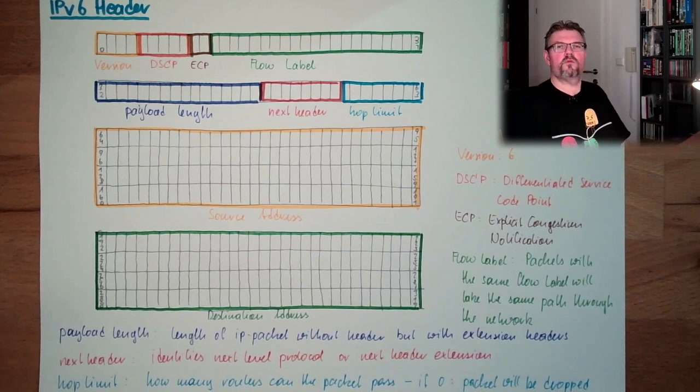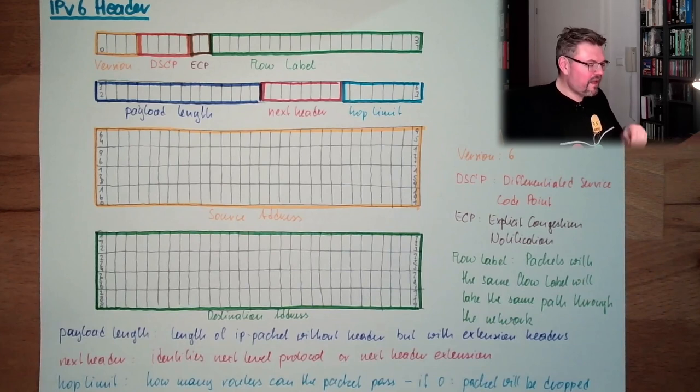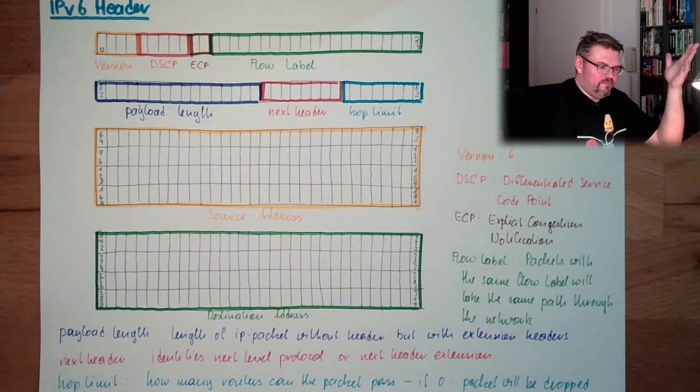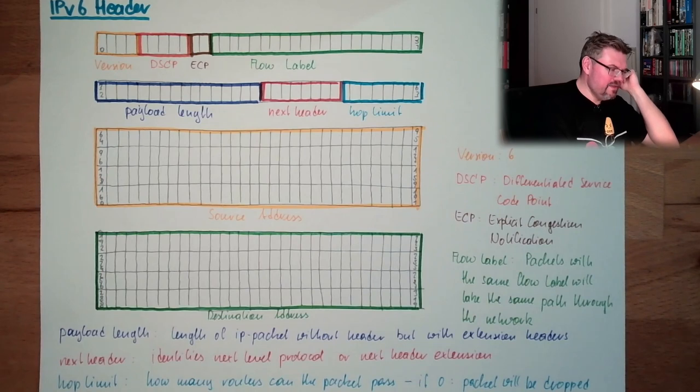And that's it. That's the Internet Protocol Version 6 Header. Nothing more, nothing less, done. Internet Protocol Version 6 Header.